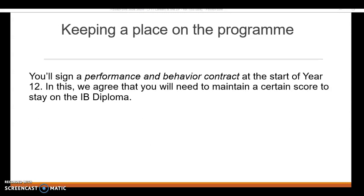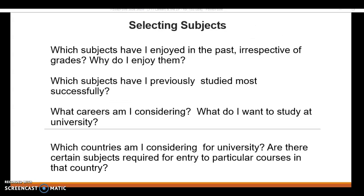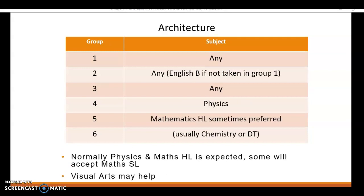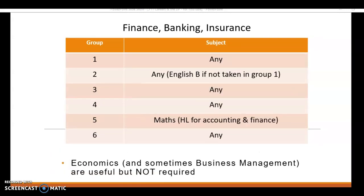Once you start Year 12, we ask you and your parents to sign a performance and behaviour contract showing you maintain certain levels to remain on the full IB diploma. In terms of selecting subjects, think about: what have you enjoyed in the past, what have you done well at, and looking forward, what may you study at university? These are a rough guide to the type of subject choices you may consider depending on the degree you'd like to study.